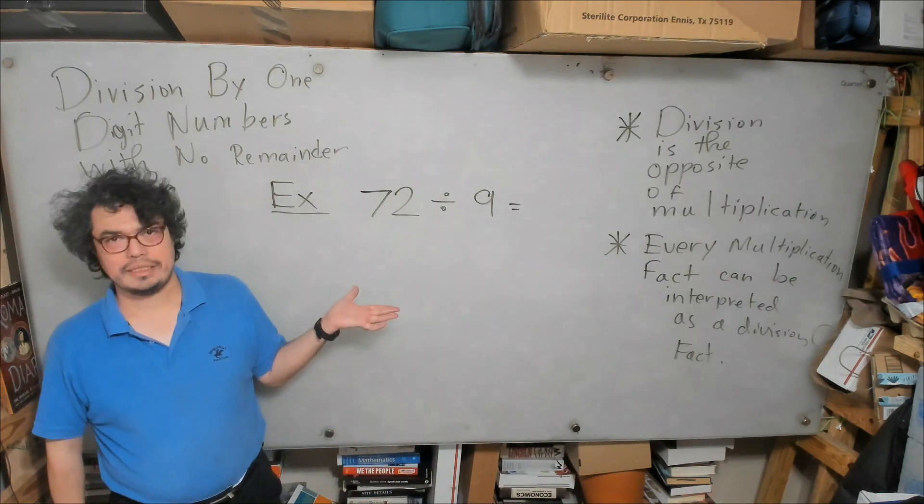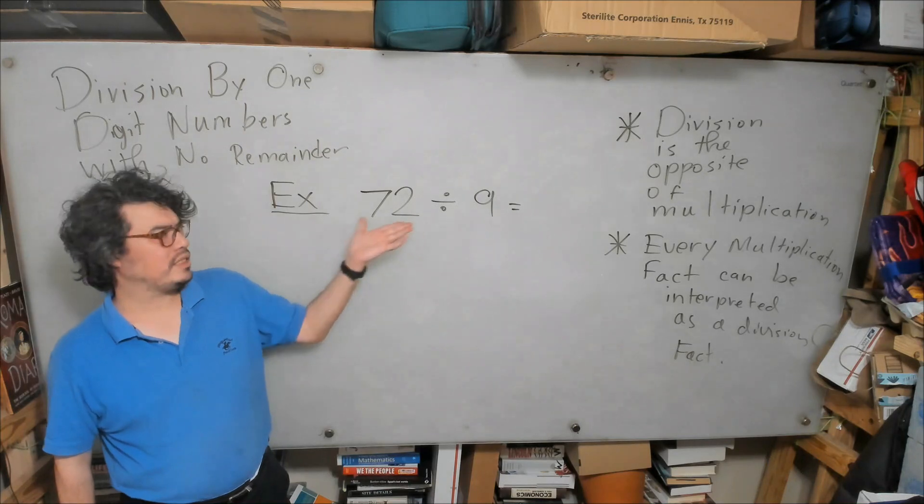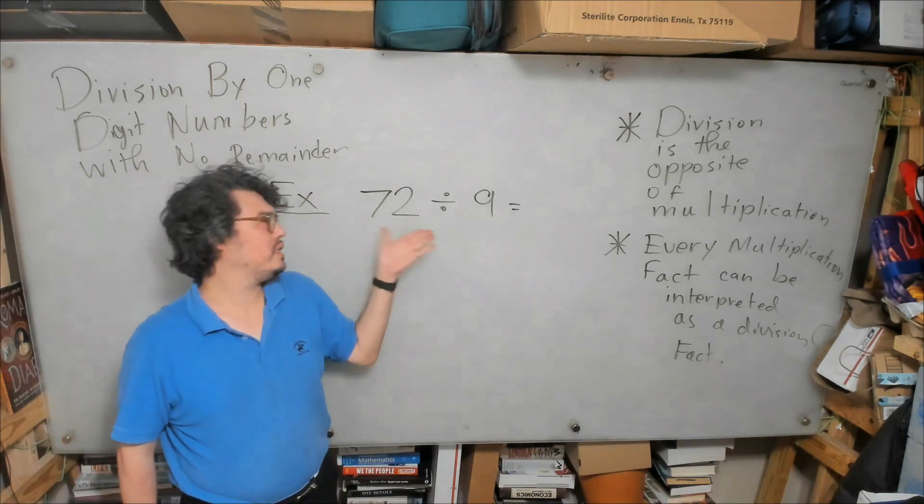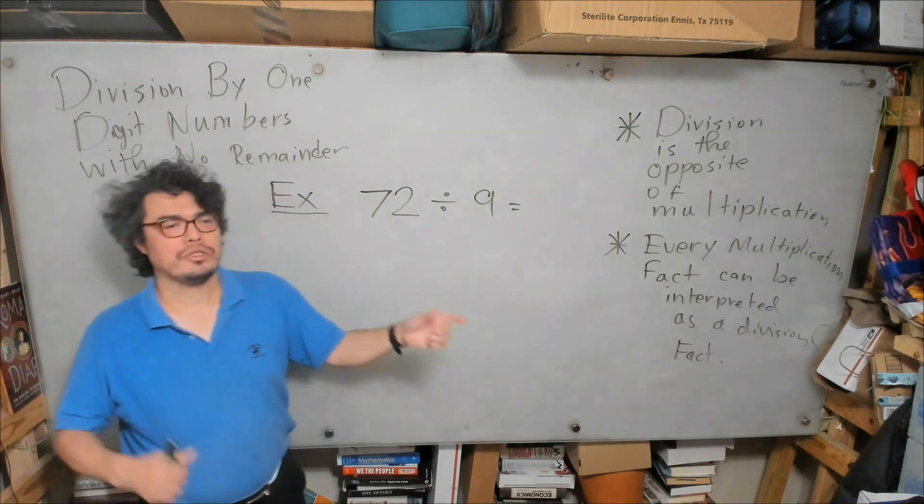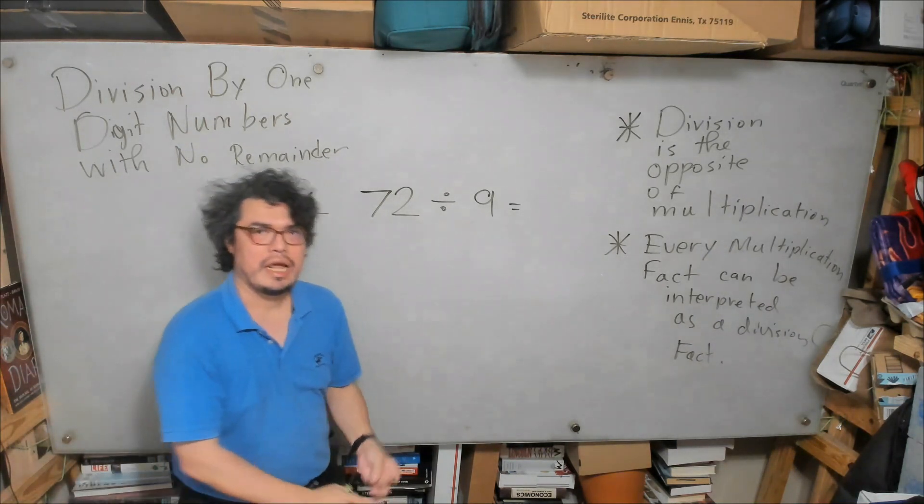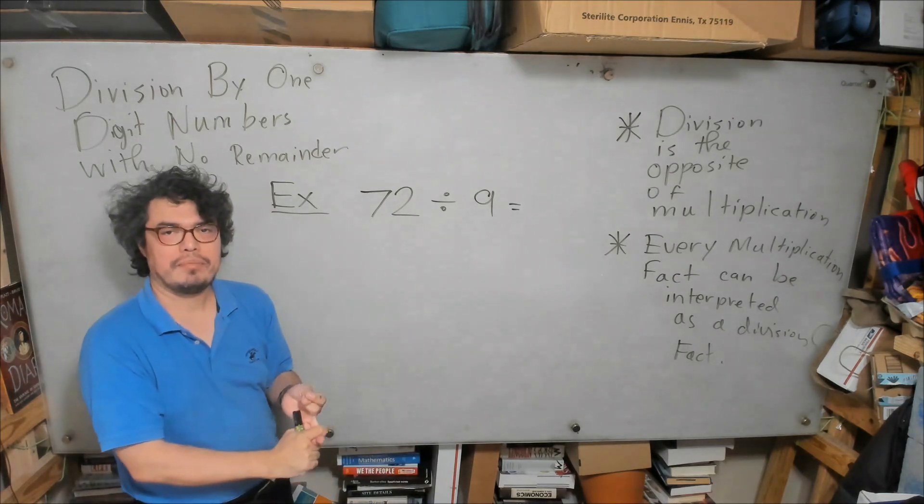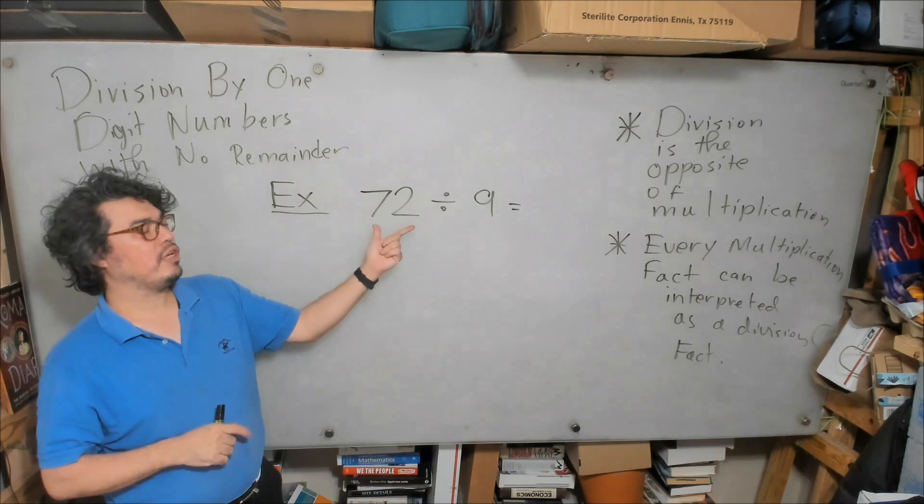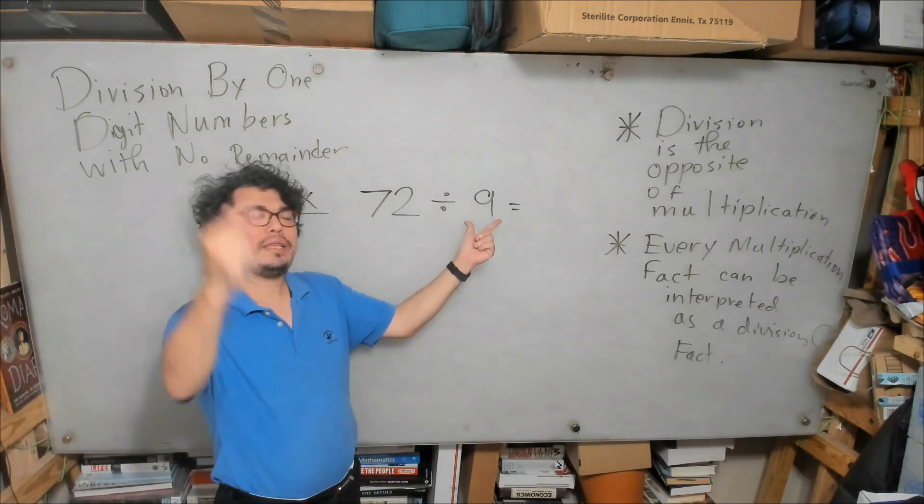So now let's look at this example. The question is what is 72 divided by 9? Remembering our facts, division is the opposite of multiplication, and every multiplication fact can be reinterpreted as a division fact. If we're asking 72 divided by 9, we can think: